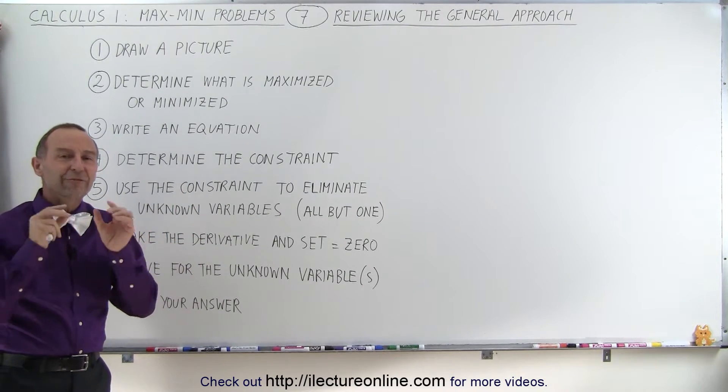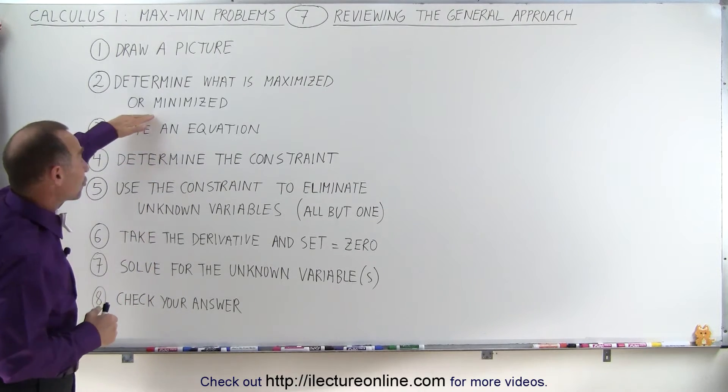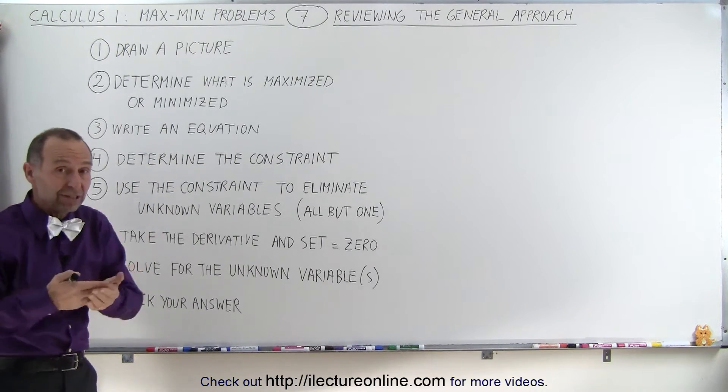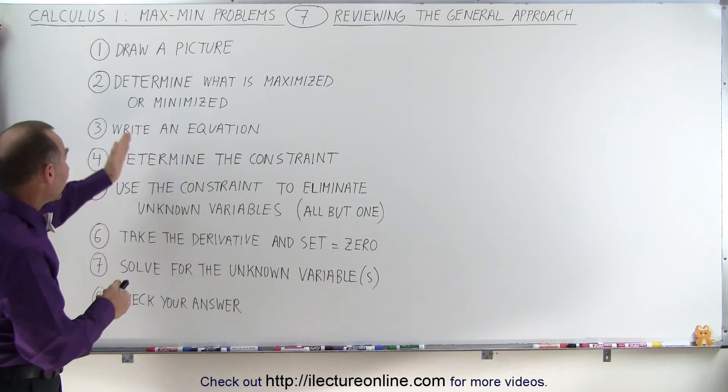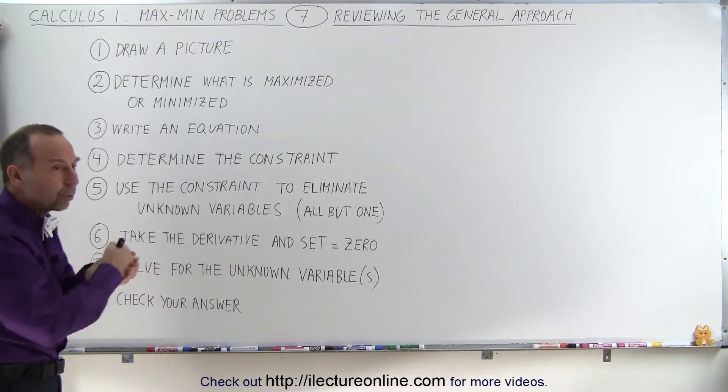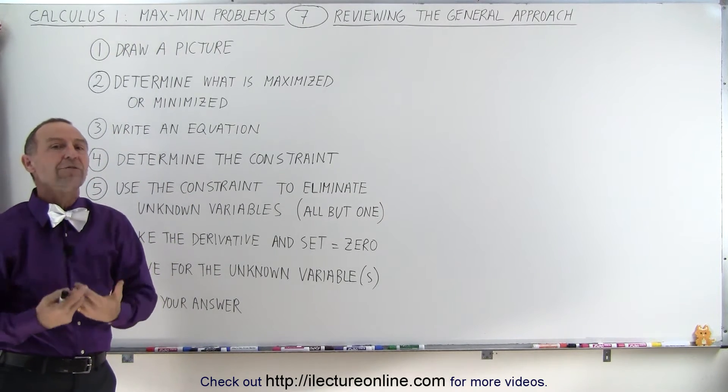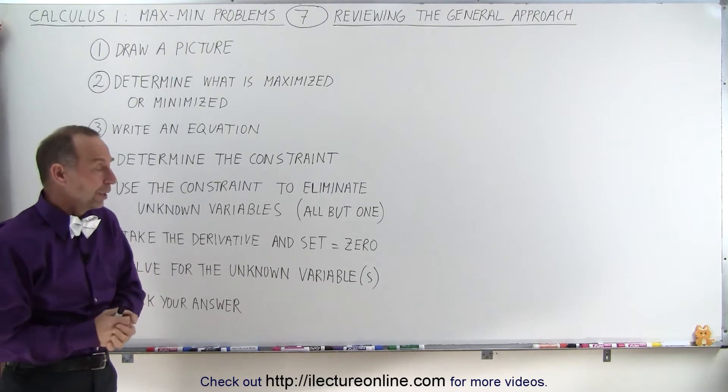Then you want to take the variable that you determined you're trying to maximize or minimize, such as the volume, and you place that on the left side of that equation. The volume equals and it will be a function of some other variables, typically more than one.